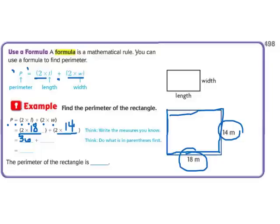2 times 14, 28. And then I add 36 plus 28 is 64. So the perimeter of this rectangle is 64 meters.